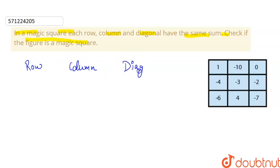This is our first row, second row, third row. So sum of first row, that is 1 minus 10 plus 0, this is minus 9.